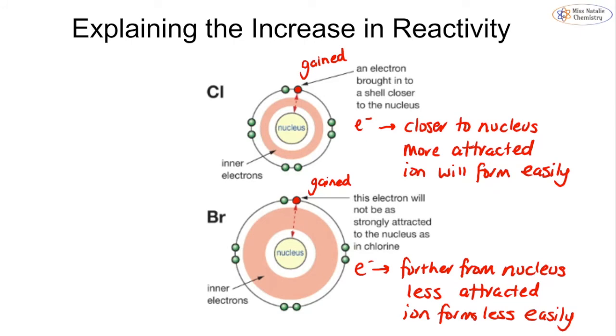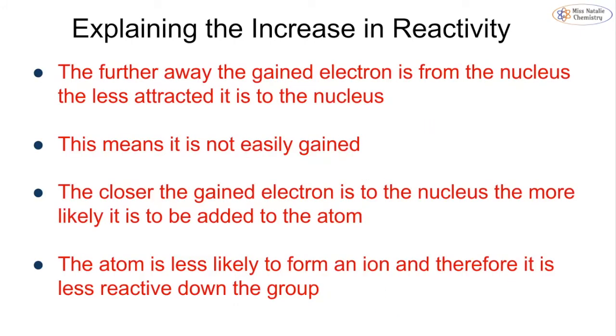So because the electron is not as easily gained when it is further away, it means it is less likely to form the ion. And if it is less likely to form the ion, that means that it's not going to undergo the reaction as well. So because of the increase in the size, we see a trend going down the group that causes the halogens to become less reactive.